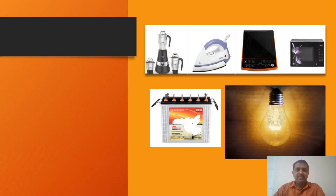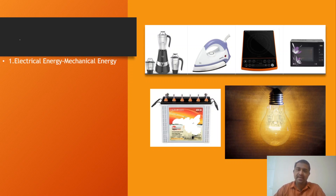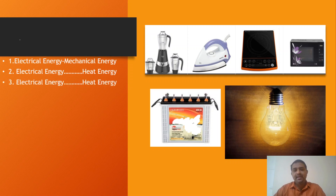As you can see, different forms of energy are involved in this process. We have a mixer grinder — that is mechanical energy. For example, an iron box converts electrical energy to heat energy. We are also concerned about an induction cup or microwave oven.